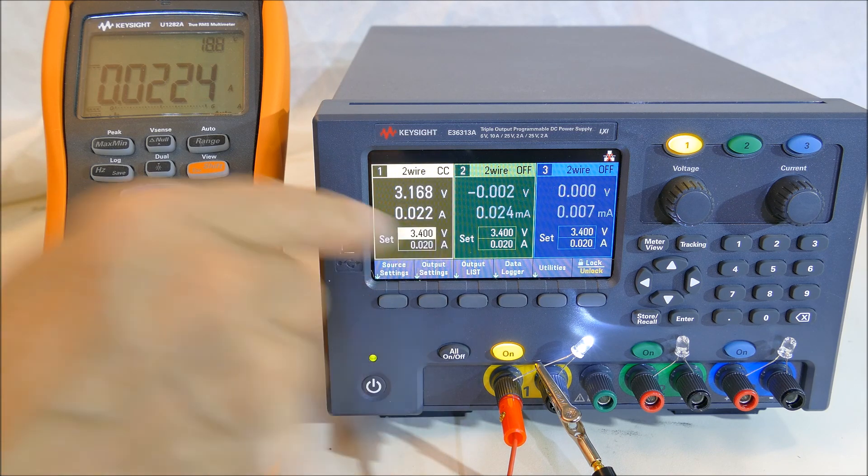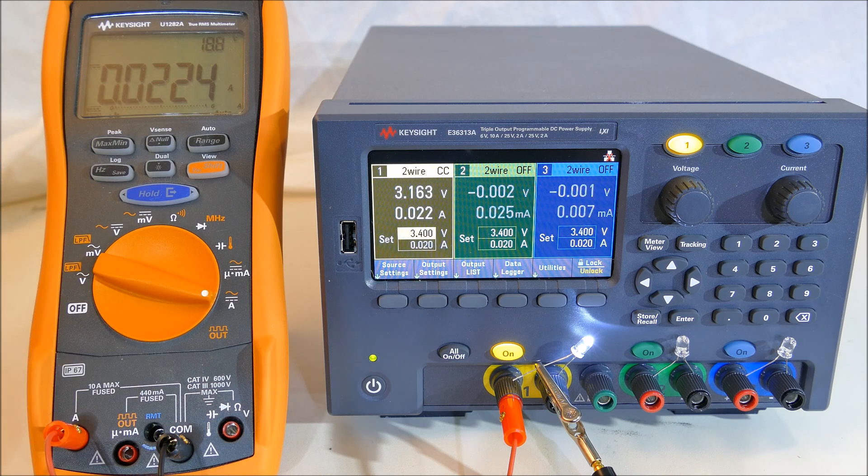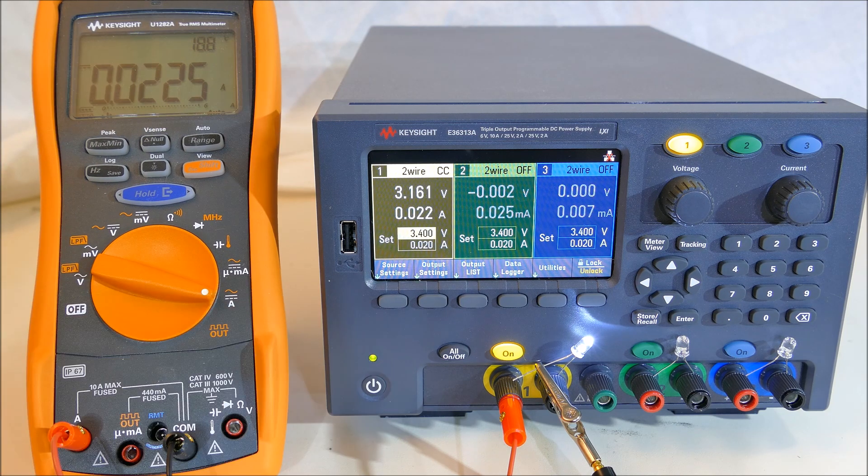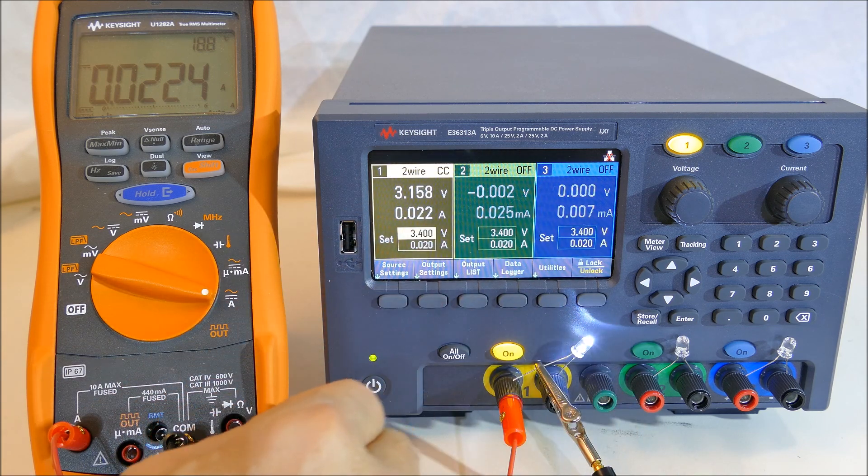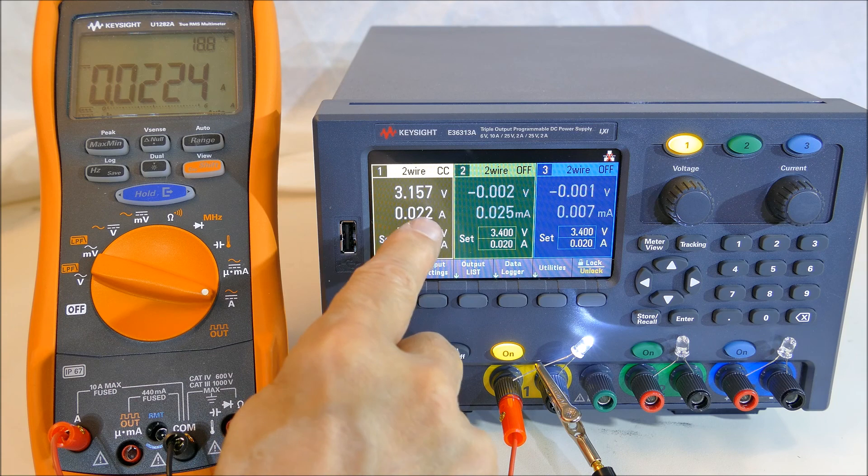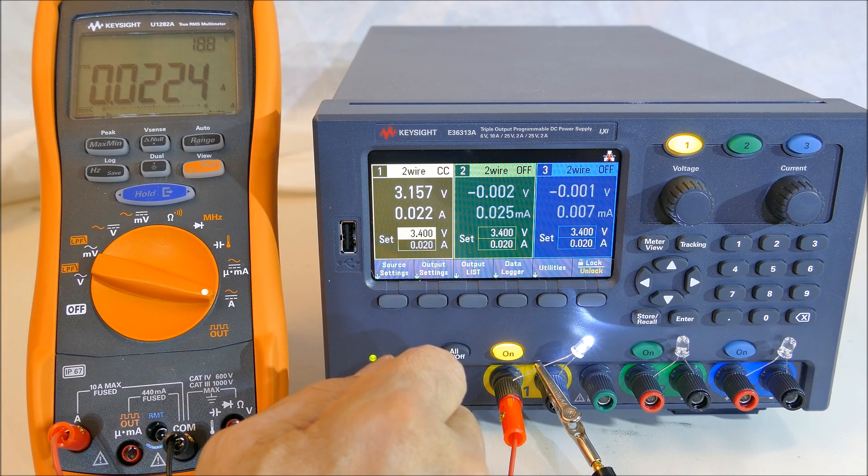22 milliamps, and that corresponds to this accurate voltmeter over here. So this meter on the power supply is very accurate, and we can use it to actually set the current to be more accurate if we need to.